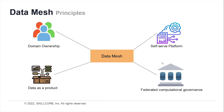Data mesh has five important principles that you need to keep in mind: domain-oriented decentralized data ownership and architecture, data as a product, self-serve data infrastructure as a platform, and federated computational governance. Let's look into each of these with a bit more detail.